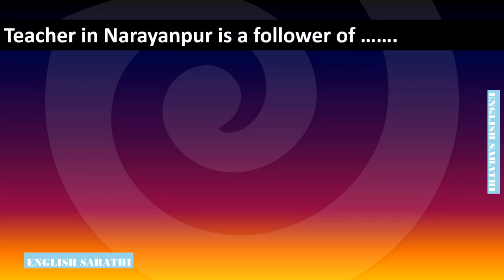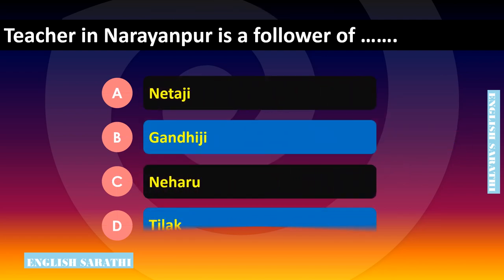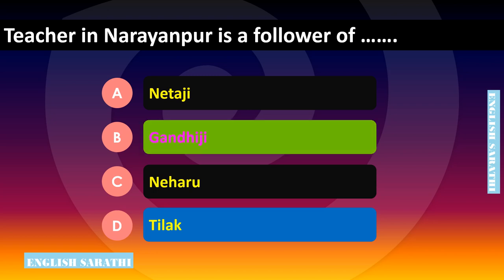The teacher in Narayan 4 is a follower of dash. Options are: option A - Netaji, option B - Gandhiji, option C - Nehru, option D - Tilak. The correct option is option B - Gandhiji. The teacher in Narayan 4 is a follower of Gandhiji.